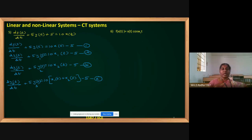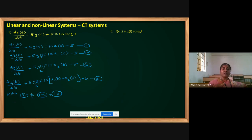Now check only the RHS. In equation 2, there is only one minus 5. But if you add equations 1a and 1b, the minus 5 appears twice — minus 5 from each case. So equation 2 RHS is not equal to 1a plus 1b RHS. Therefore, the system is non-linear. This is our conclusion.